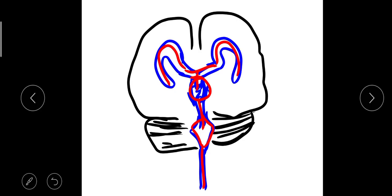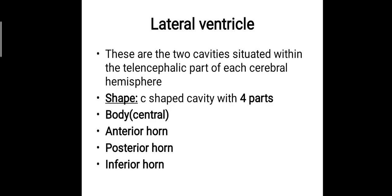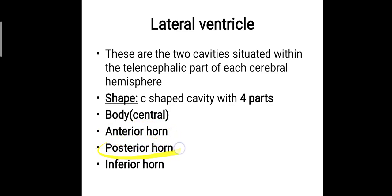Now let's discuss the lateral ventricle in detail. The lateral ventricles are two cavities situated within the telencephalic part of each cerebral hemisphere. It is a C-shaped cavity with four parts: the body, that is the central part; the anterior horn; the posterior horn; and the inferior horn.